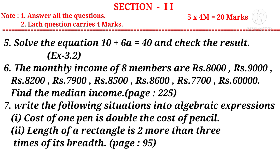Number 6: The monthly income of 8 members are Rs. 8,000, Rs. 9,000, Rs. 8,200, Rs. 7,900, Rs. 8,500, Rs. 8,600, Rs. 7,700, and Rs. 60,000. Find the median income. It is a question from the chapter Data Handling.